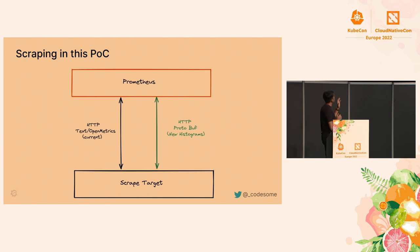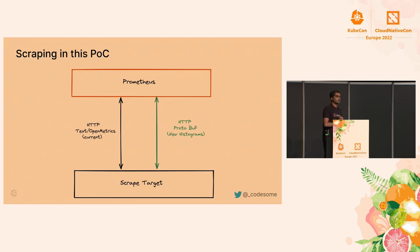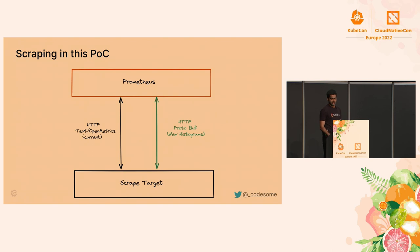In this proof of concept, scraping looks like this. Currently we have an HTTP request for the text format giving the old-style time series. We do a second HTTP request to get the new sparse histograms, which are encoded in protocol buffer format because it's more efficient and easier to describe the new histogram structure. So Prometheus makes two requests to a target to get all the data it needs.